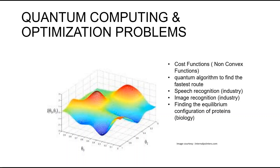Optimization is also needed in speech recognition and image recognition, where quantum computers can also be used. And in biology, finding the equilibrium configuration of proteins also requires optimization.